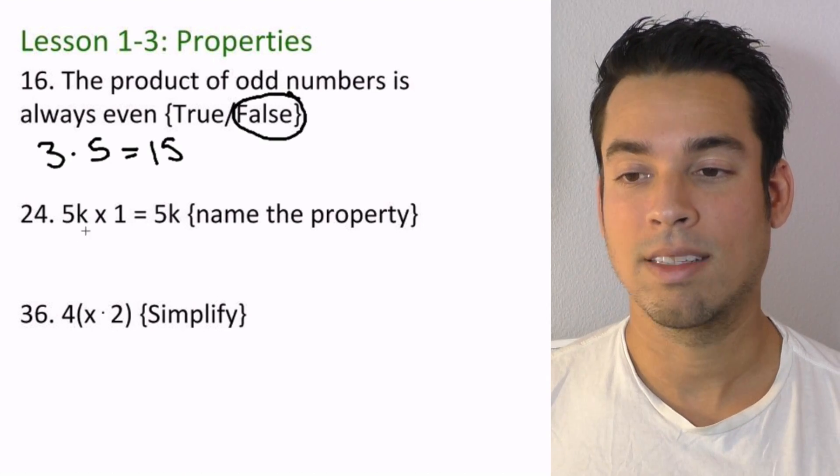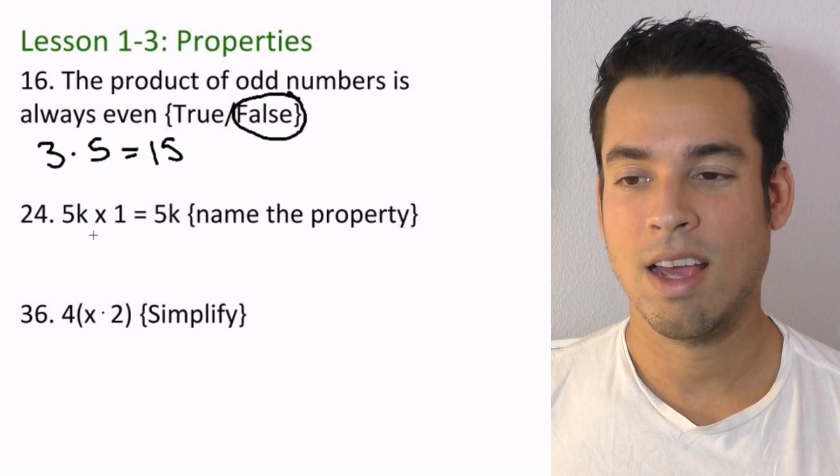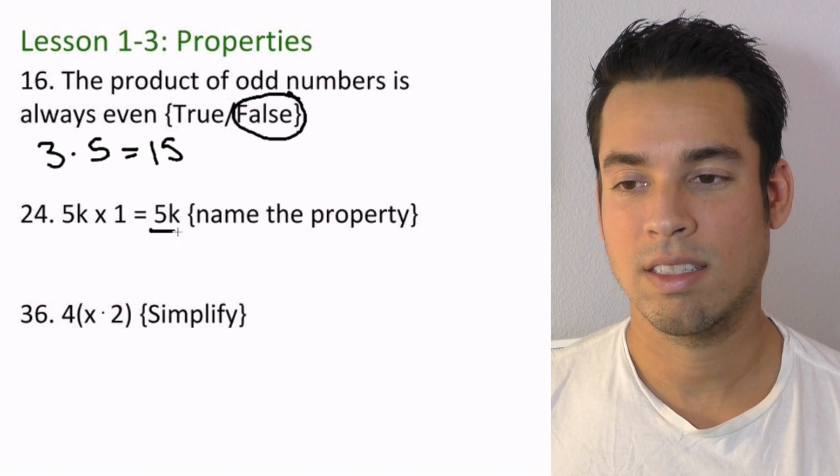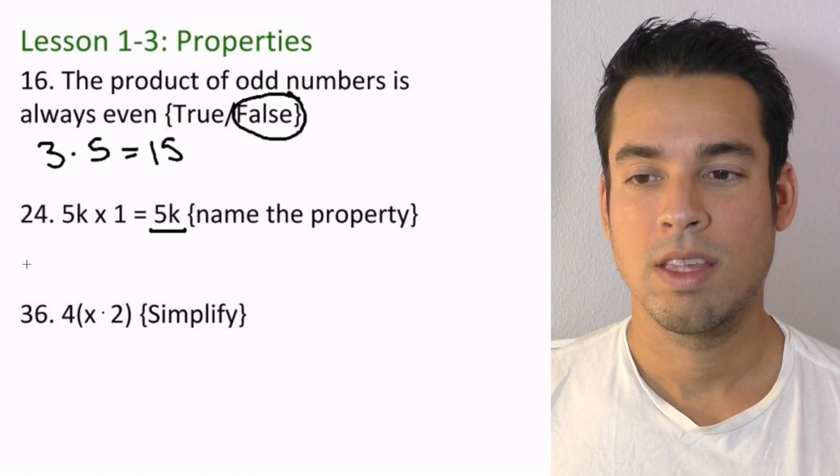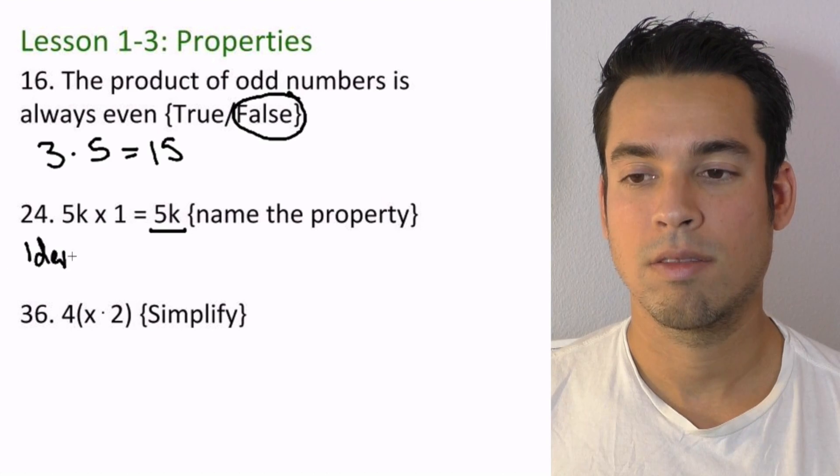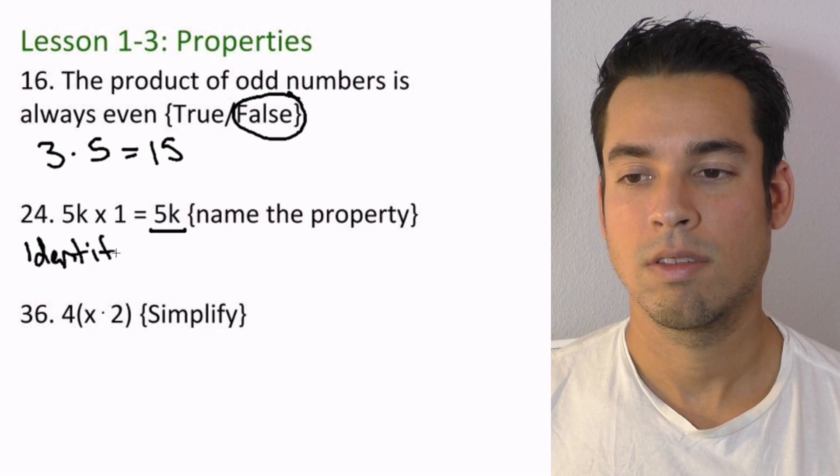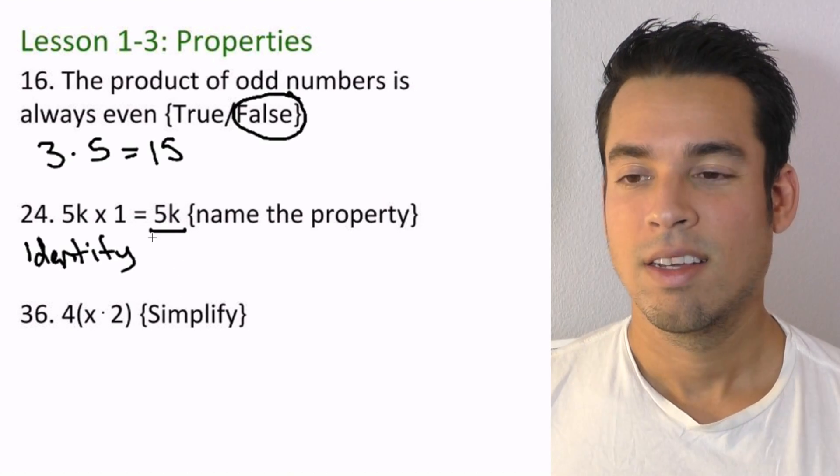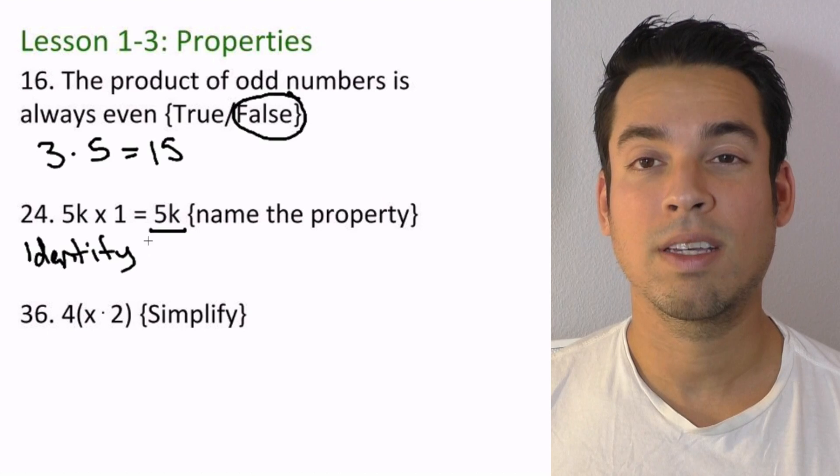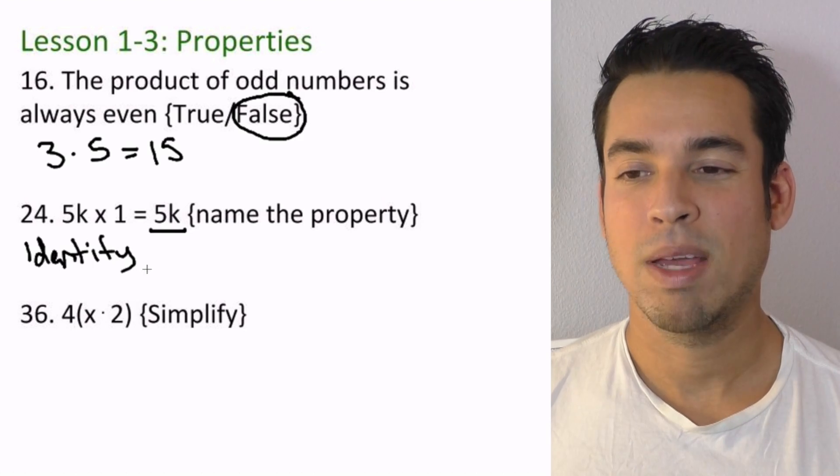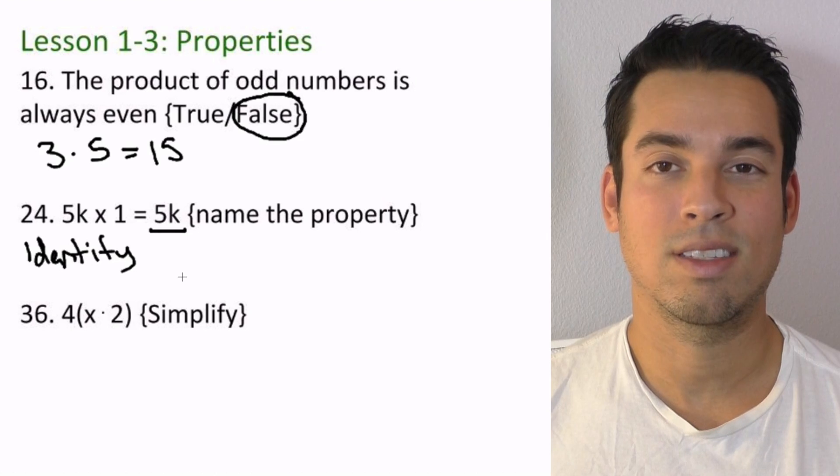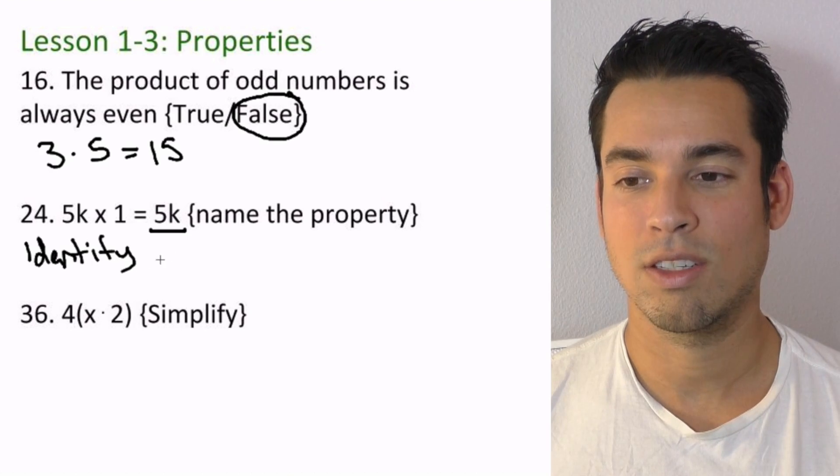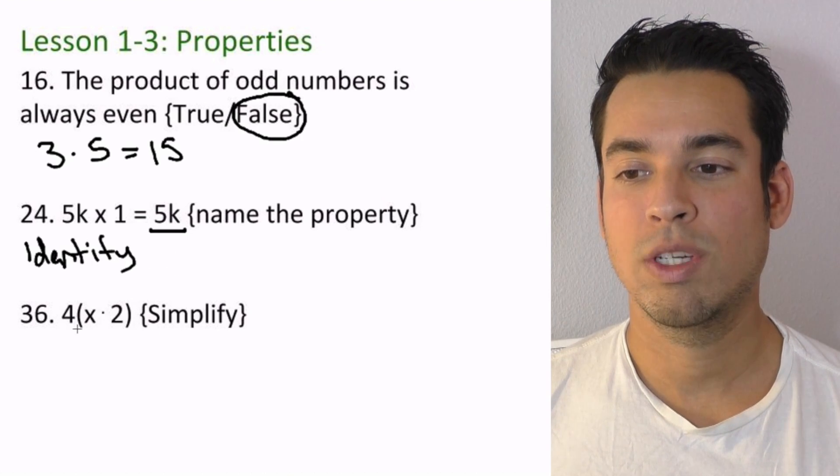Now this is very specifically the identity property, multiplicative identity. So when we're talking about multiplicative identity, it's basically what we're showing—that any number or quantity times 1 is simply itself. That's what this is showing. All right, next we go.